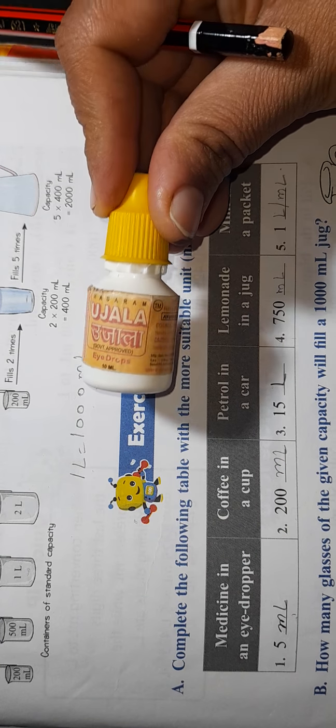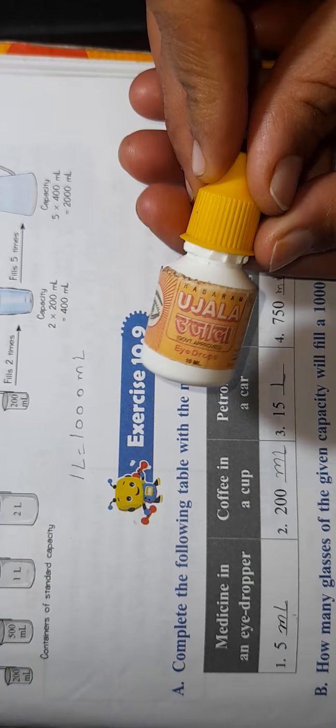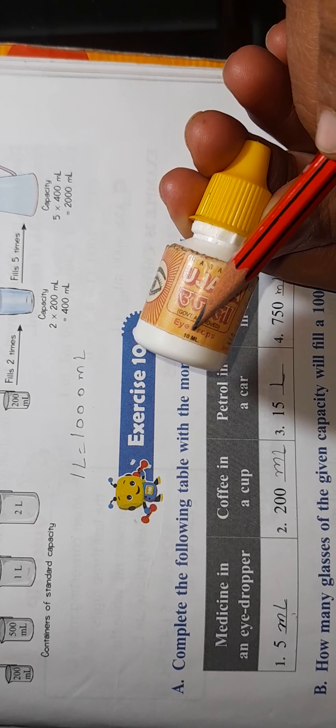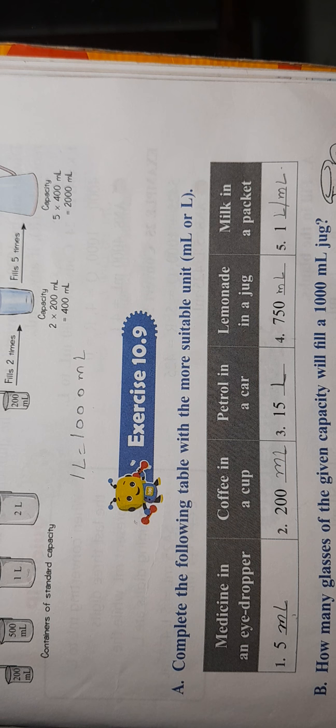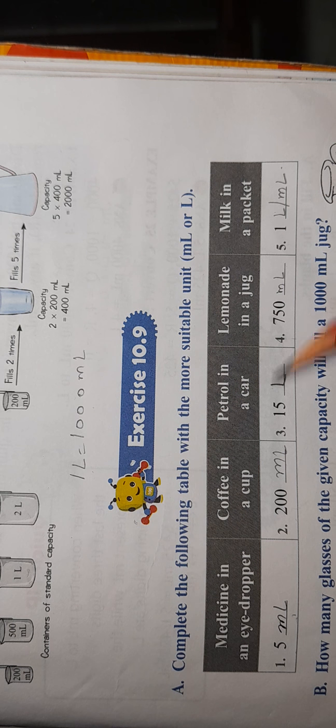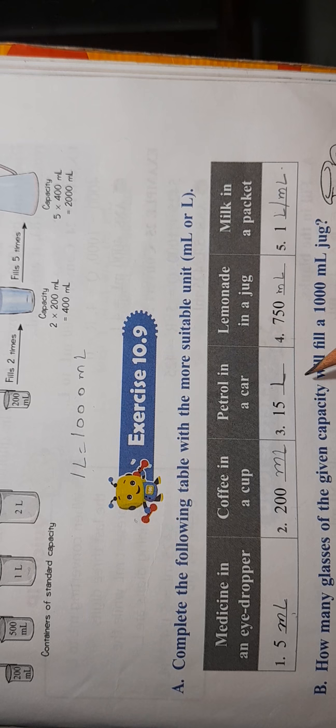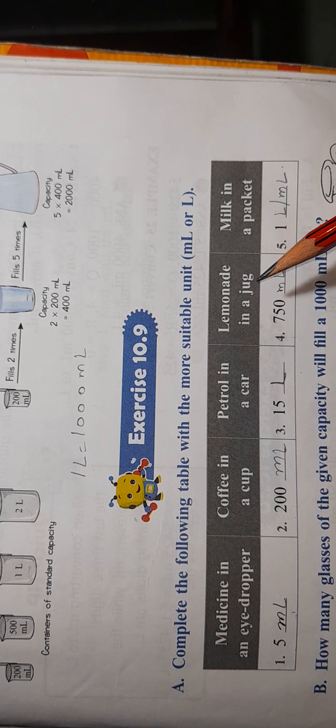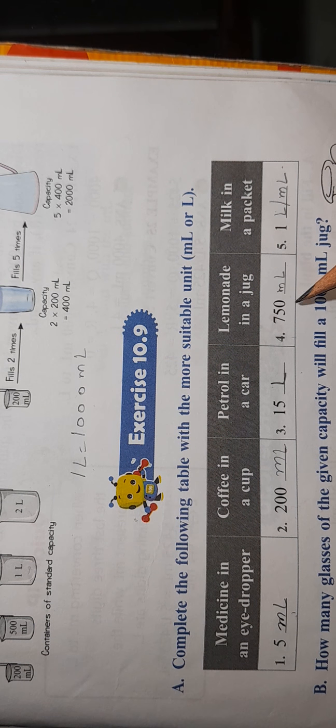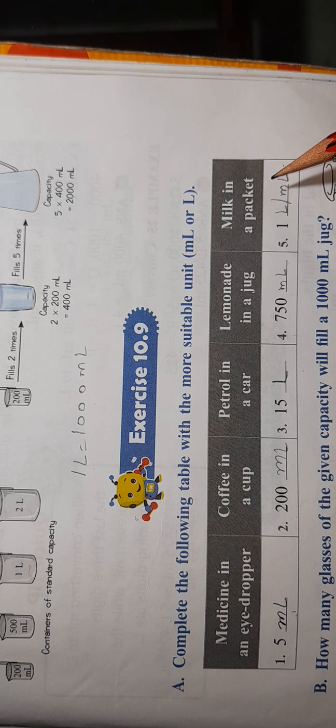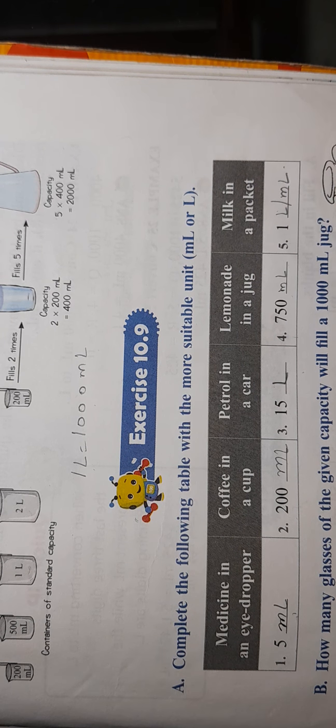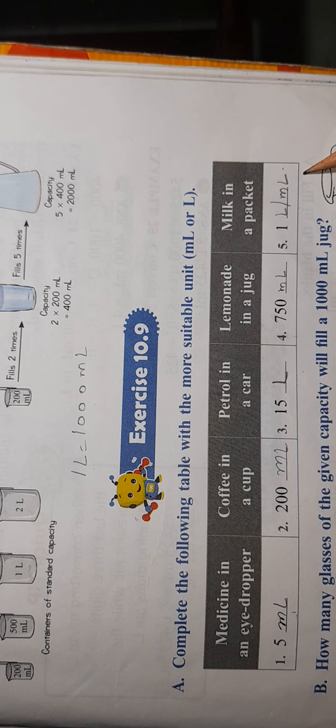Coffee in a cup, how much coffee can come in a cup? Milliliters. Petrol in a car: liters. Lemonade in a jug: 750 ml. Milk in a packet, how much can come in a packet? It can come in a liter. Both are right here.